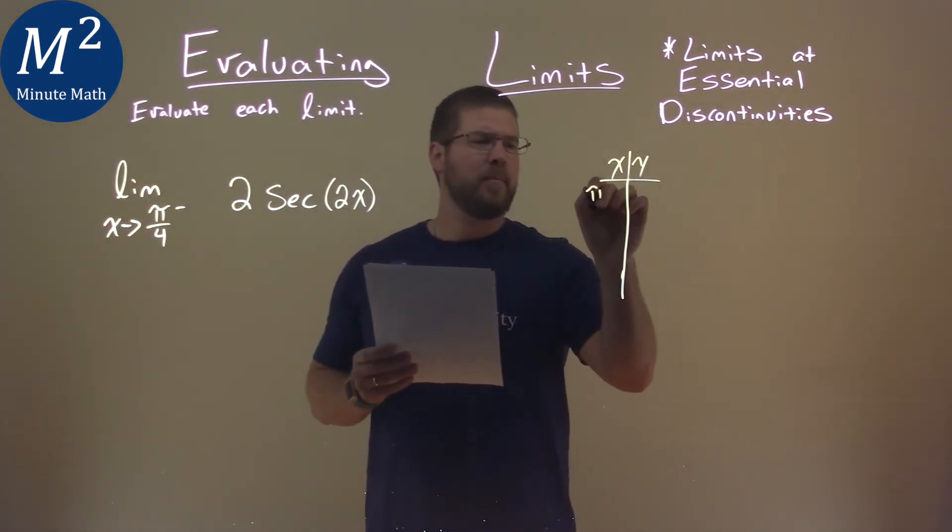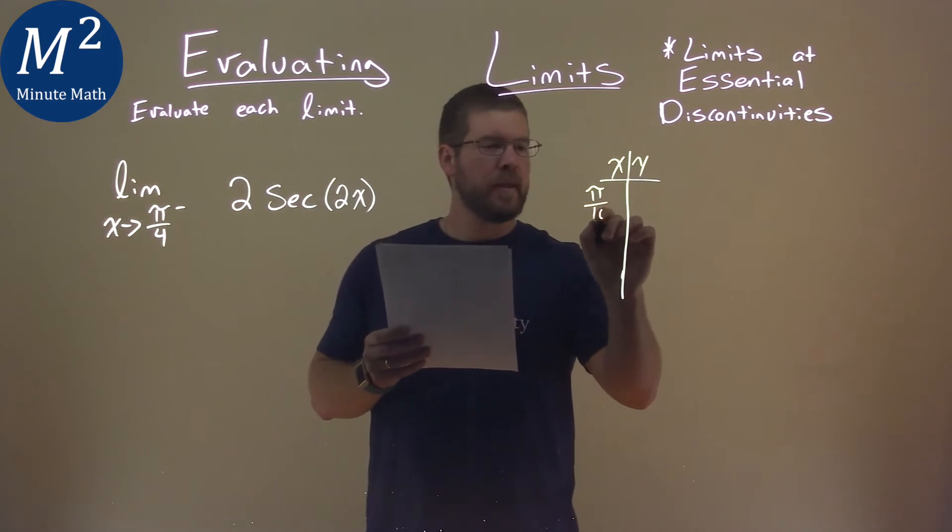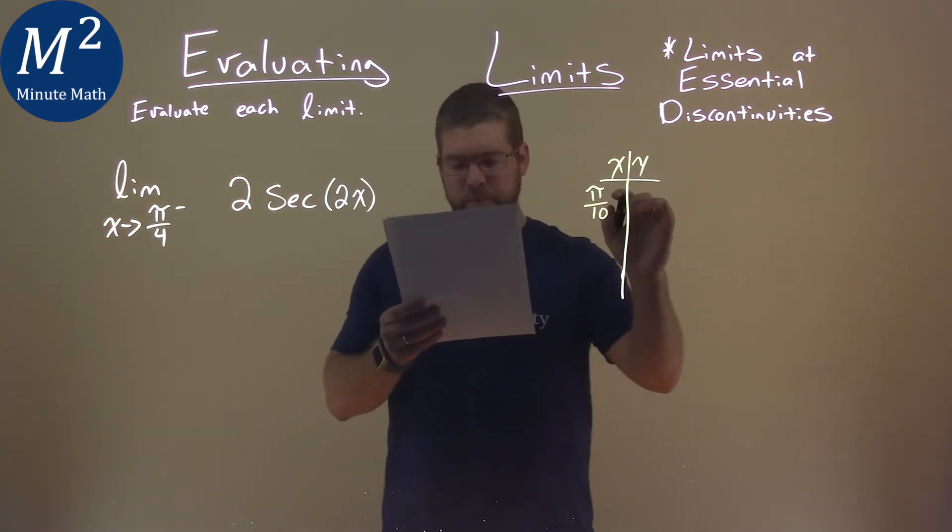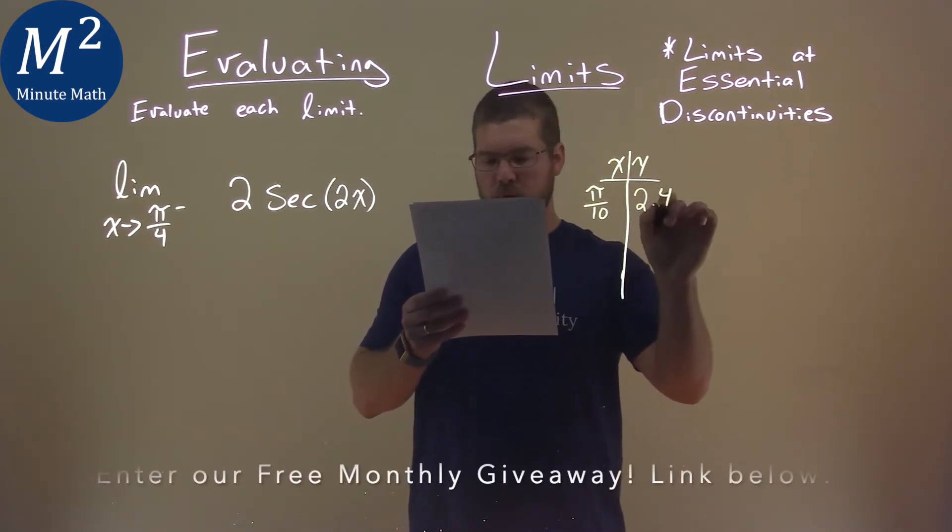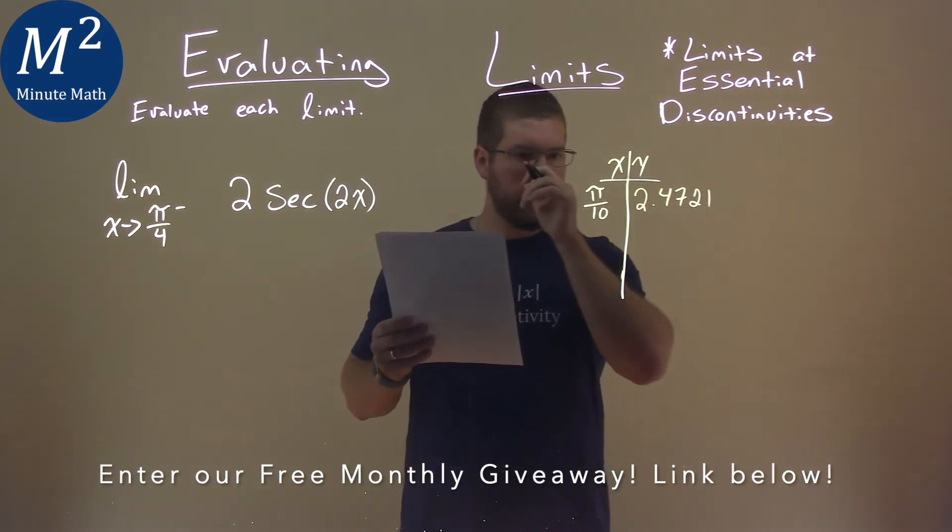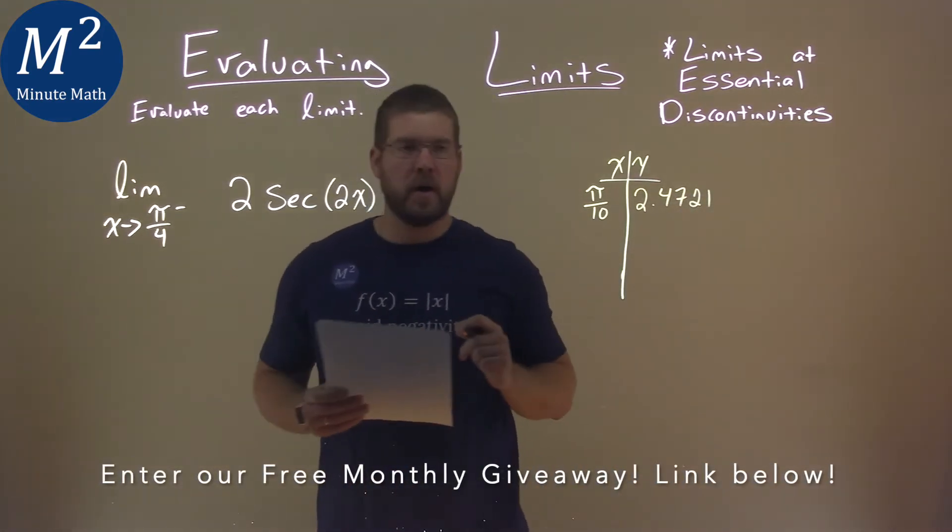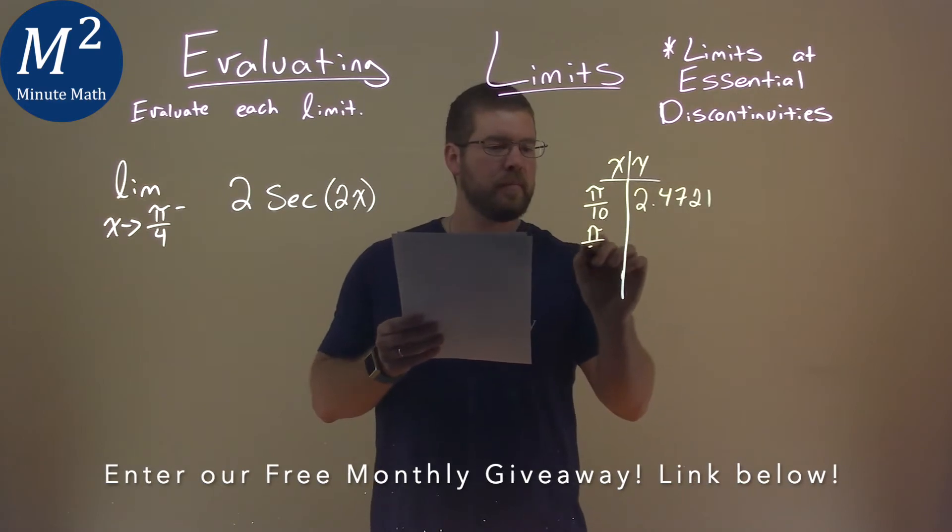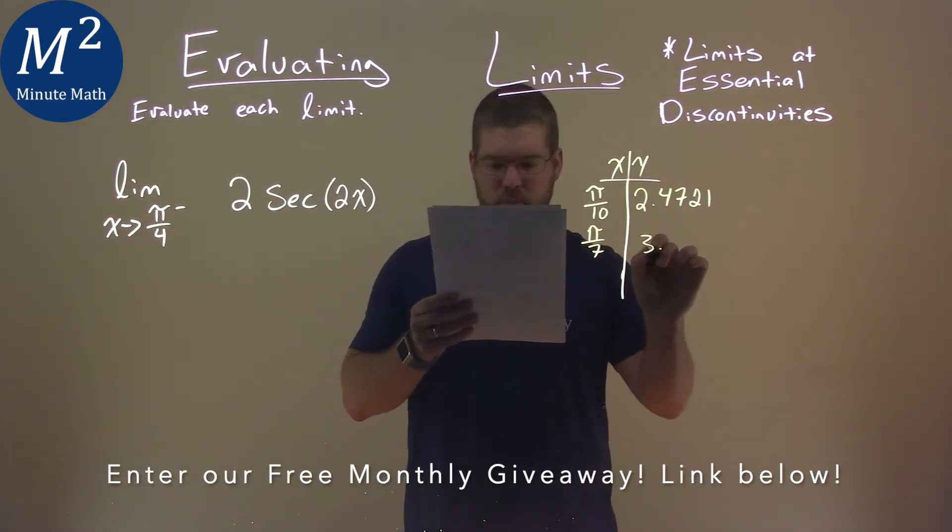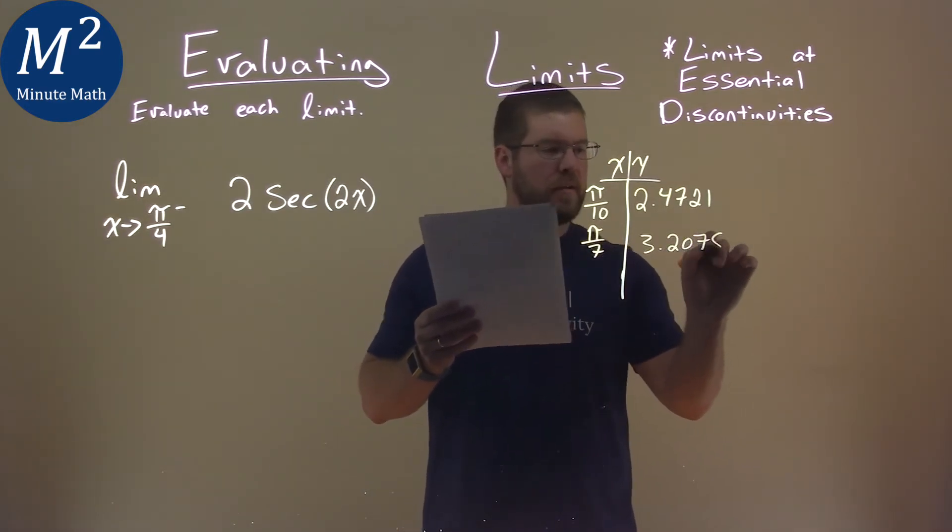So I use my calculator, and I plug in pi over 10, and then these are all rounded values here, but approximately 2.4721. I'm going to keep getting closer and closer to pi over 4. Pi over 7 came out to be 3.2078, approximately.